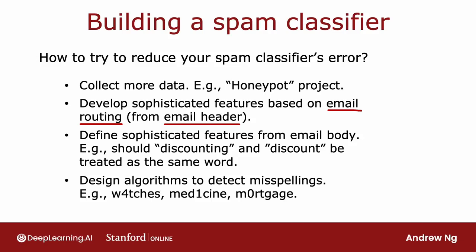Or you might work on coming up with more sophisticated features from the email body — the text of the email. For instance, discounting and discount might be treated as different words, but maybe they should be treated as the same word. Or you might come up with algorithms to detect deliberate misspellings like watches, medicine, and mortgage, which could also help decide if an email is spammy. Given all of these and possibly even more ideas, how can you decide which are more promising to work on? Choosing the more promising path forward can speed up your project easily 10 times compared to choosing less promising directions.